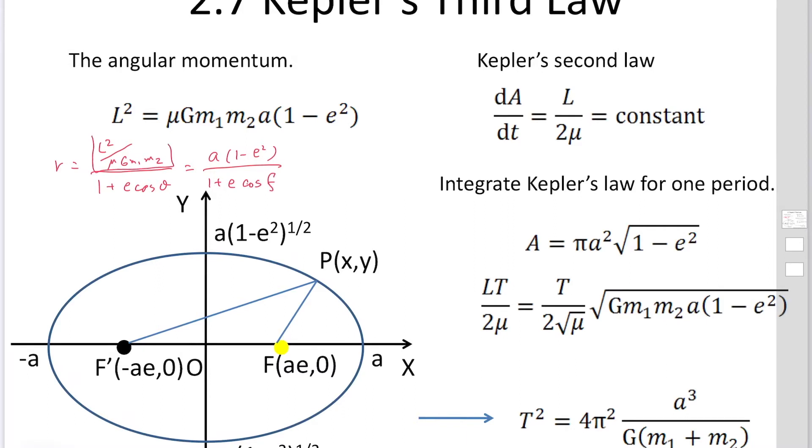So these numerators have to be the same. So L² is equal to μ times Gm₁m₂a times (1 - e²).